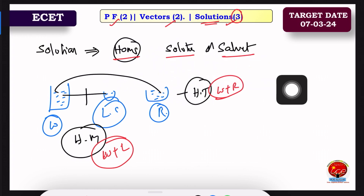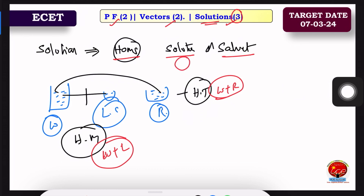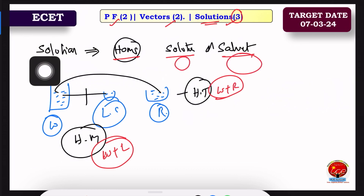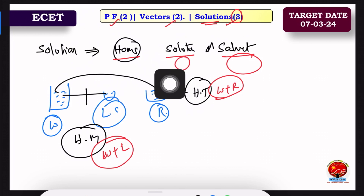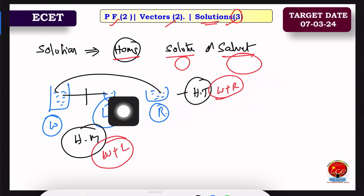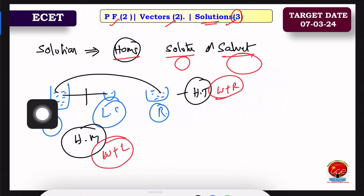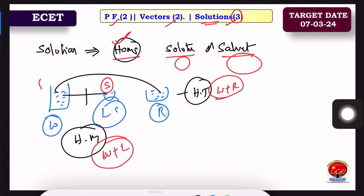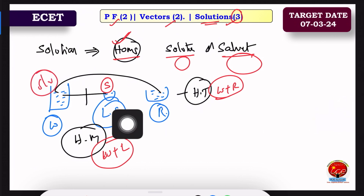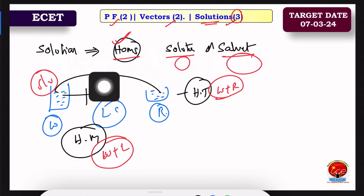Solute and solvent: solute is what is dissolved, and solvent is what is used to dissolve it. In lemon juice, the juice is the solute and water is the solvent. Solute is the smaller quantity in the solution.